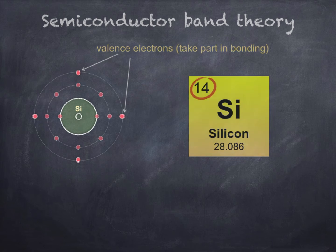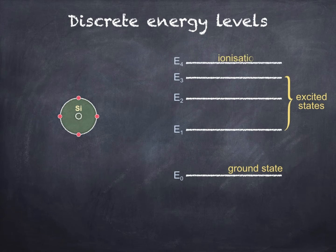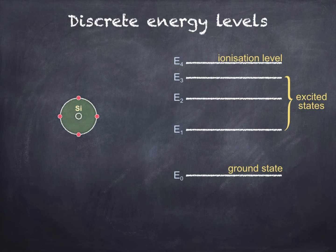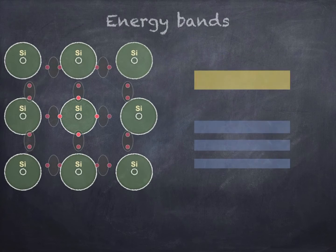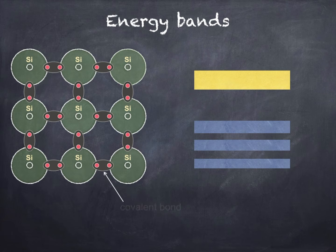We'll simplify our model of the silicon atom to show only the four outer valence electrons which take part in bonding. In individual atoms, the electrons can only occupy discrete energy levels. The production of line emission spectra and line absorption spectra can be explained in terms of electrons moving to different energy levels and either emitting or absorbing a photon, although that's covered in another lesson. When a large number of atoms come together to form a solid, the energy levels become reorganized into bands as the atoms interact. Each energy band actually consists of many, many closely spaced energy levels. You can see from the diagram on the left that all four of the silicon atom's outer electrons form covalent bonds with the neighbouring atoms.